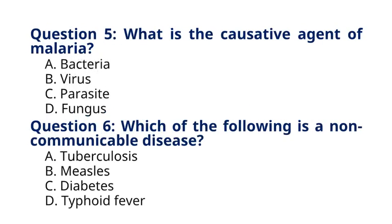Question 5: What is the causative agent of malaria? A. Bacteria, B. Virus, C. Parasite, D. Fungus. The correct answer is option C, Parasite. Explanation: Malaria is caused by the Plasmodium parasite, which is transmitted to humans through the bite of infected Anopheles mosquitoes.